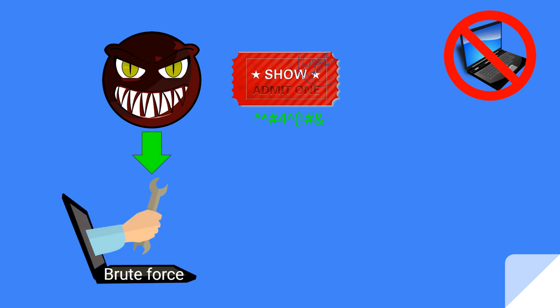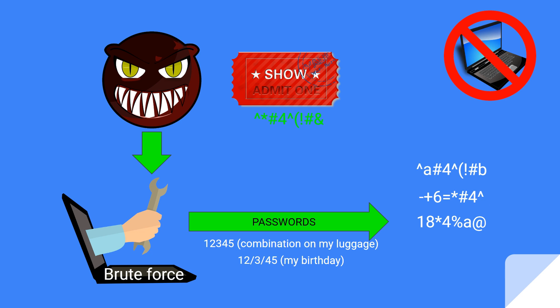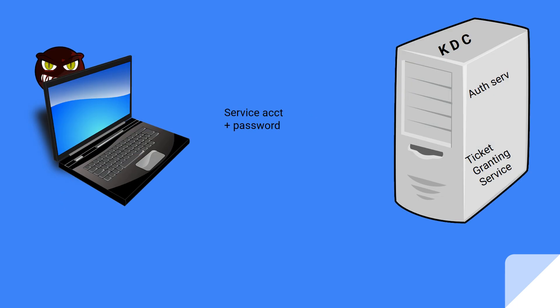He already knows the encryption algorithm because it's easy to glean from the ticket itself. So basically he tries a bunch of passwords using his tools, and as soon as the ciphertext he produces matches the ciphertext of the ticket, he knows which password created the ciphertext and now has the password to the service account. And now if the service account has full admin privileges, the attacker can access any service on the network.